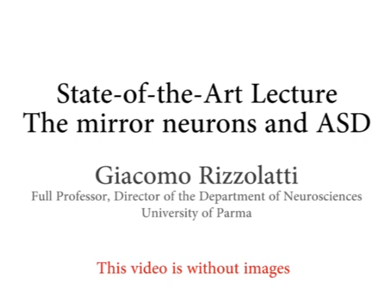Now I think the correct version is to say that the mirror mechanism is a basic mechanism, very similar to other basic mechanisms. Maybe it's an exaggeration, but think about EPSPs — excitatory post-synaptic potentials. If they are in the muscle, they produce contraction; if they are in the visual system, they produce vision. The same is true for the mirror mechanism: it has no unique function, but the function depends on where it is anatomically located.